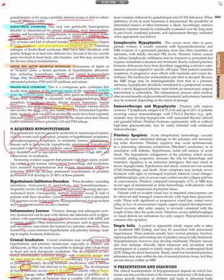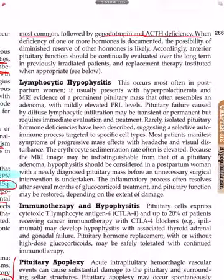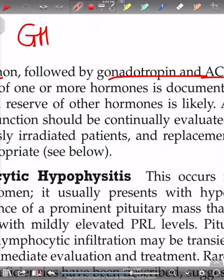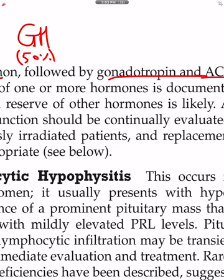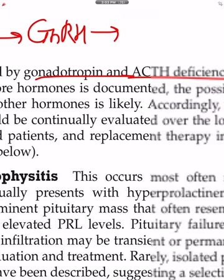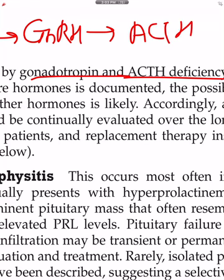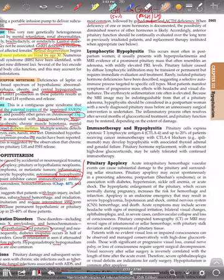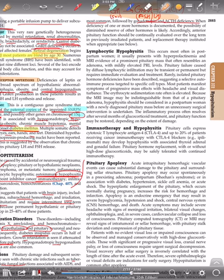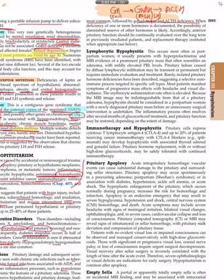Although the pattern of hormone loss is variable, GH deficiency is most common. Mark this: GH deficiency is most common followed by gonadotropin and ACTH deficiency. This order is important. GH comprises 50 percent of cells, GH followed by gonadotropin and ACTH. When deficiency of one or more hormones is documented, the possibility of diminished reserve of other hormones is likely. Accordingly, anterior pituitary function should be continually evaluated over the long term of the previously irradiated patient and replacement therapy should be instituted.